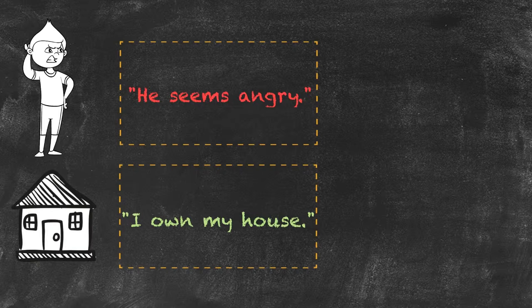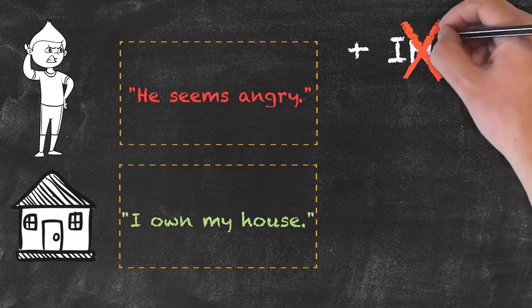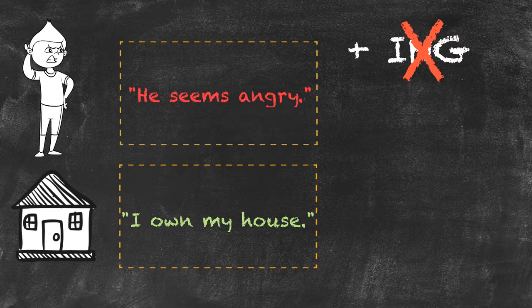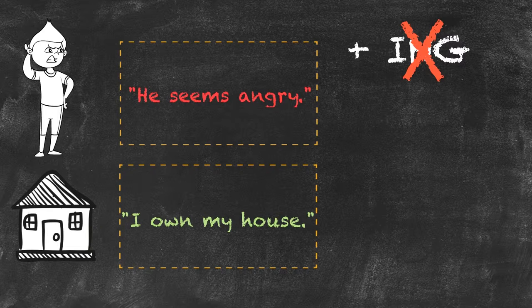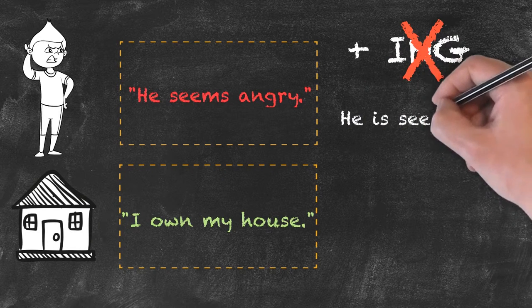A very big differentiation between the two here is state verbs typically don't take the progressive or continuous form. That form is the verb plus ing. As I said before, he seems angry. It would be very awkward to hear someone say he's seeming angry.